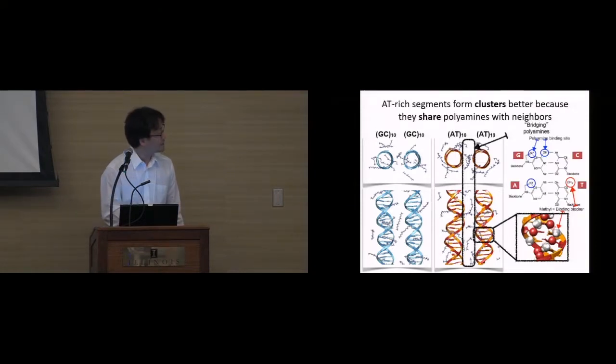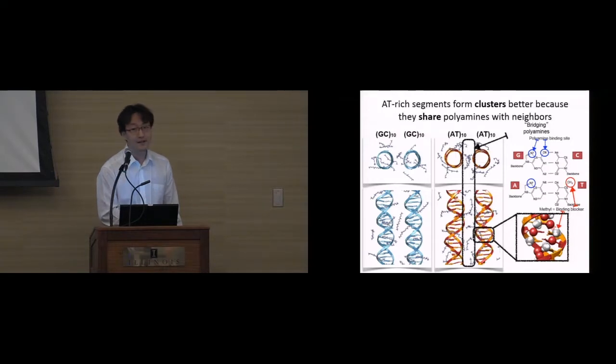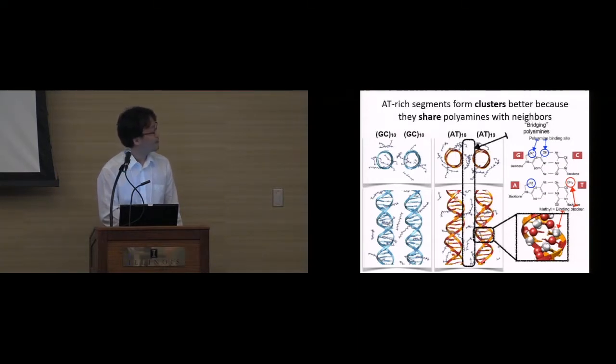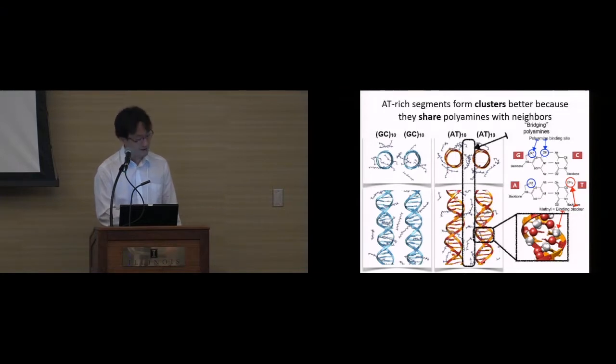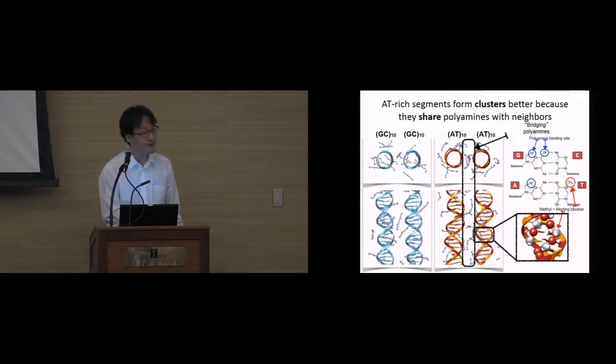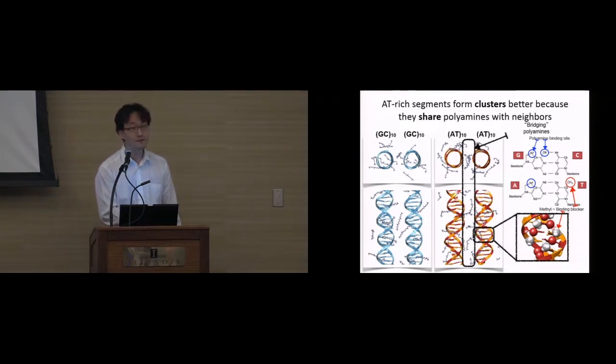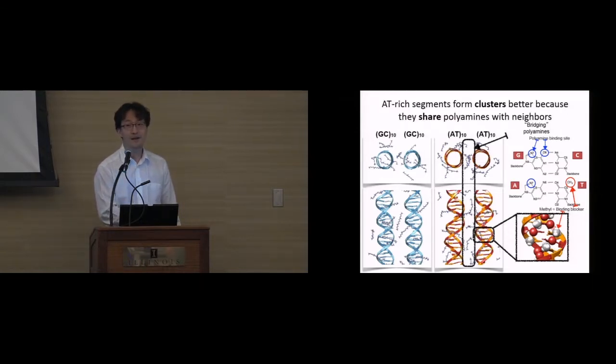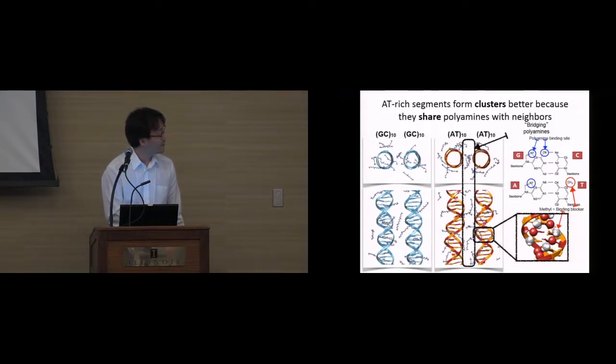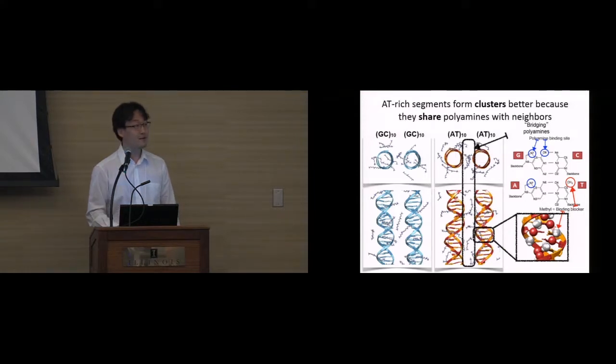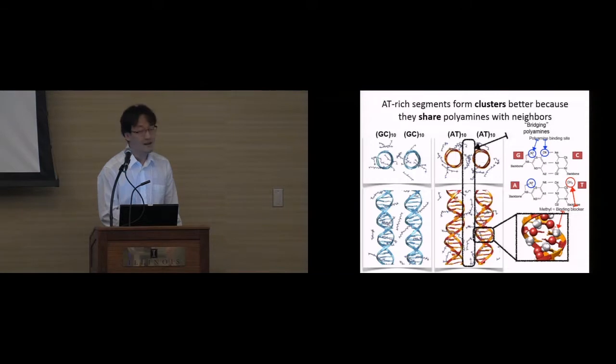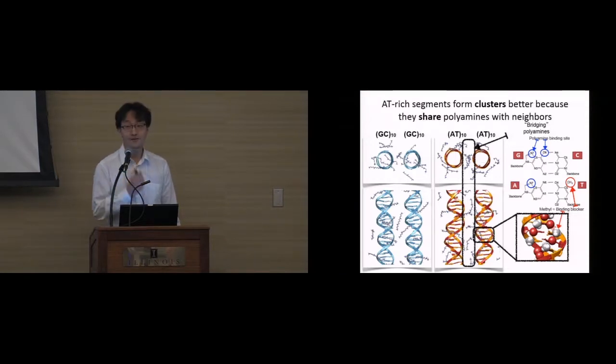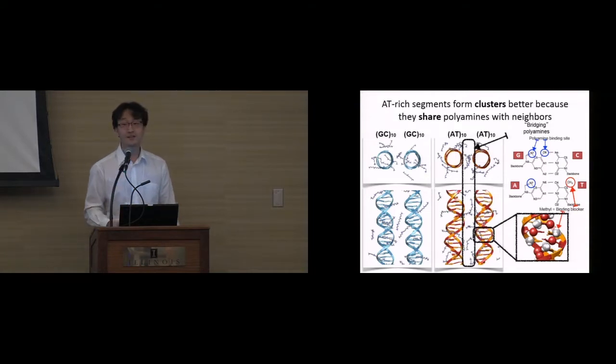And chemically, it happens because, for example, guanine has a quite strong carion binding site, N7-nitrogen. And then it also has N7-nitrogen, but in case of 8-rich segment, thiamine, thiamine is a methyl group. For example, this is a close view of the major group of 8-rich segment. And the red spheres are N7-nitrogen, which are a carion binding site. But what is important is that the gray spheres, which is a methyl group from thiamines, they kind of block the carion binding to N7-nitrogen. So that's why for 8-rich segment, polycarion cannot bind, polyamines cannot bind to the major group.